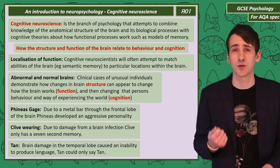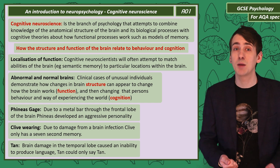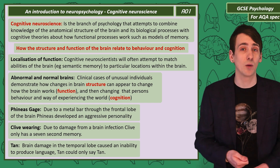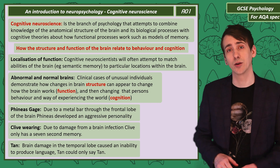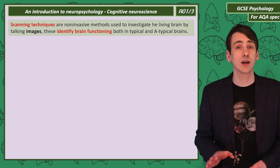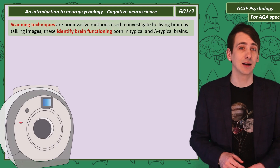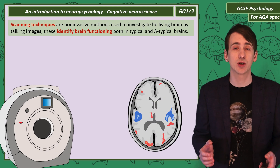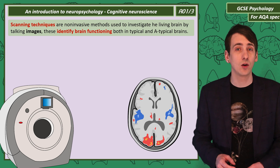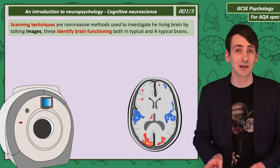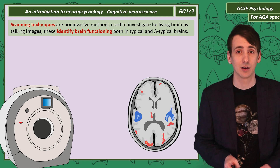There are problems with using abnormal brains to study brain function. The sample size is often only one person, so they may be unusual in other ways, and we're interested in how a healthy brain functions. Fortunately, we now have a range of scanning techniques to study the functioning living brain — we're going to look at three: CT, PET, and fMRI. All three use a similar looking machine but very different technology to produce their images.